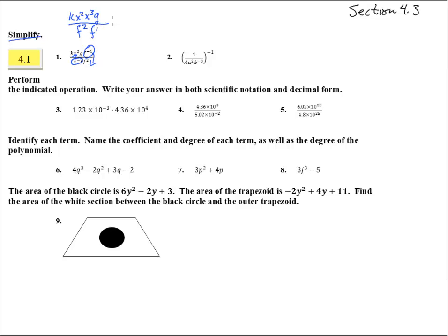Now when we multiply them, we get kx to the — these two are multiplied, so we add those exponents — x to the fifth. G, and then on the bottom the 2 and the 1 add together, so we get an f cubed. There's number 1.